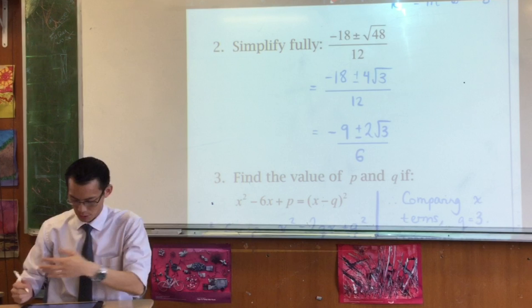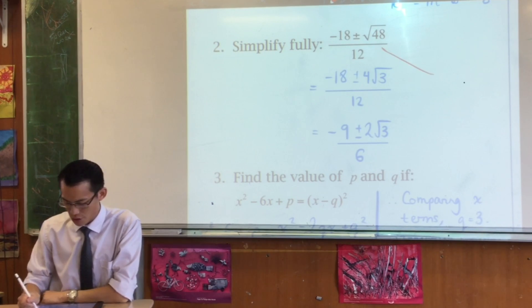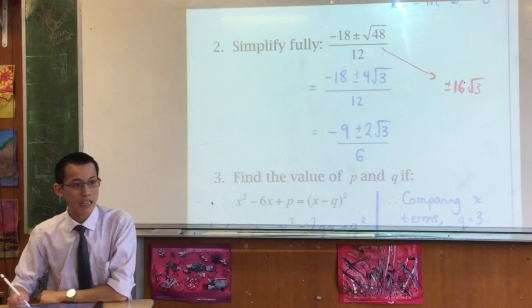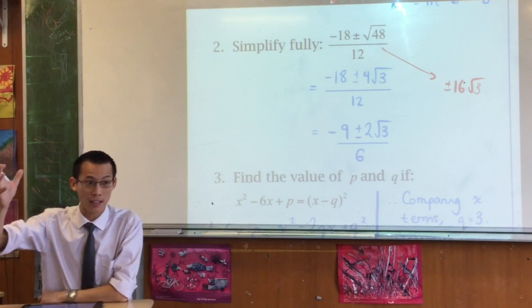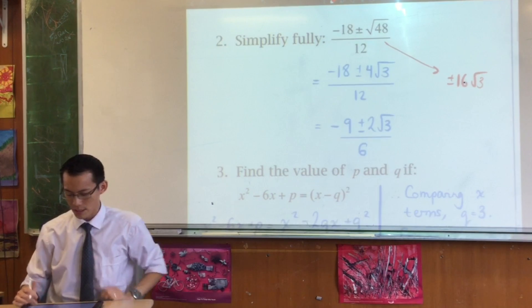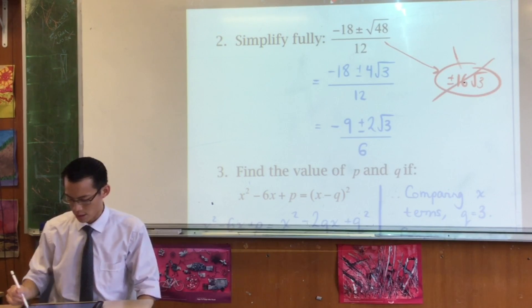You wouldn't believe the number of year 11 students, year 12 students, who in a panic, in a rush, what they will write is plus or minus 16 root 3, because they're thinking of the 16, and they forget, wait, what am I doing with that as I take it out? So it becomes a 4, so please notice that. It's a very common error, don't do it.